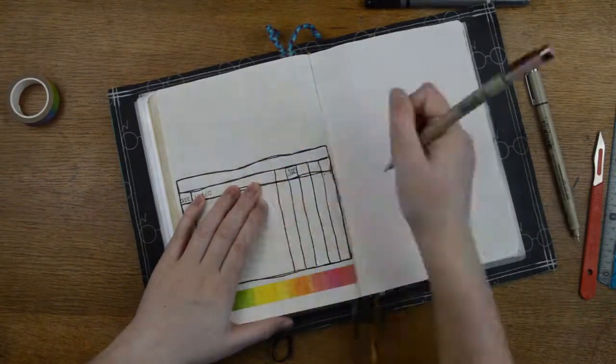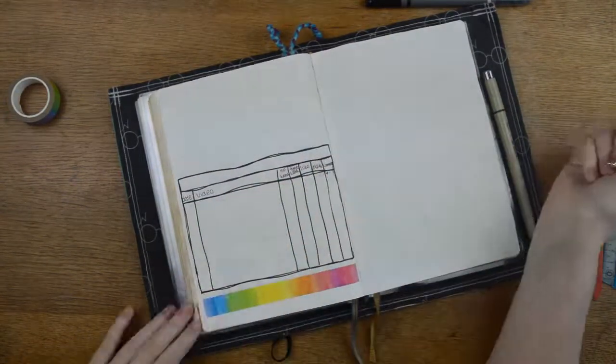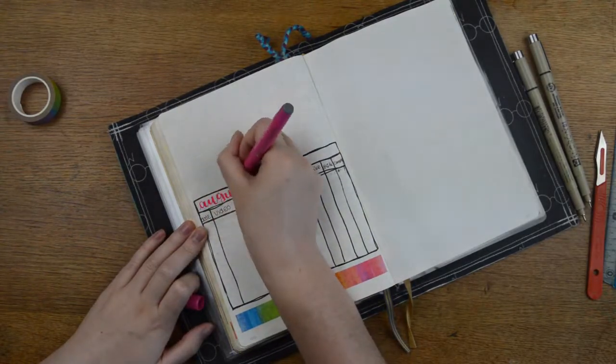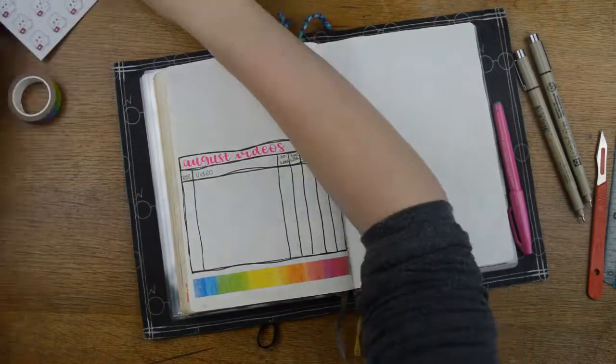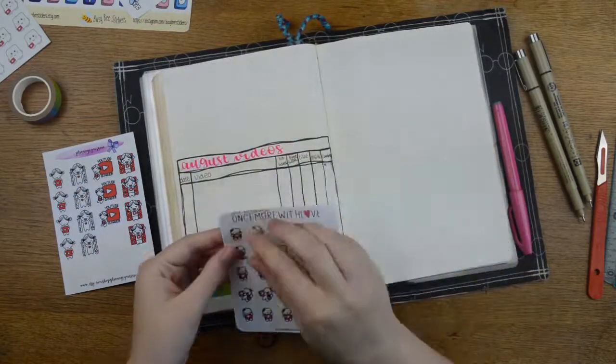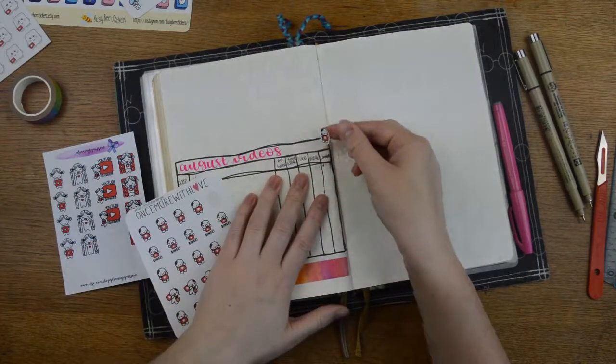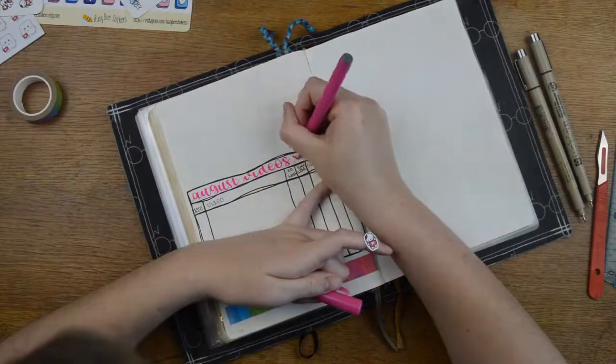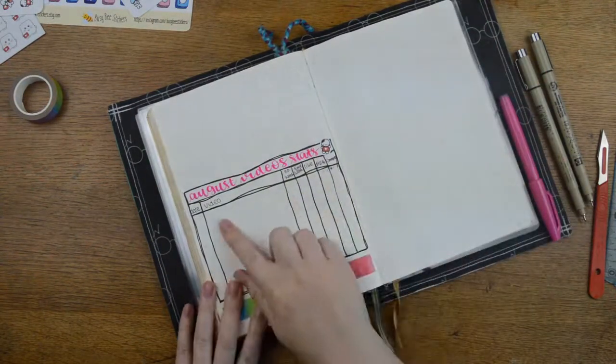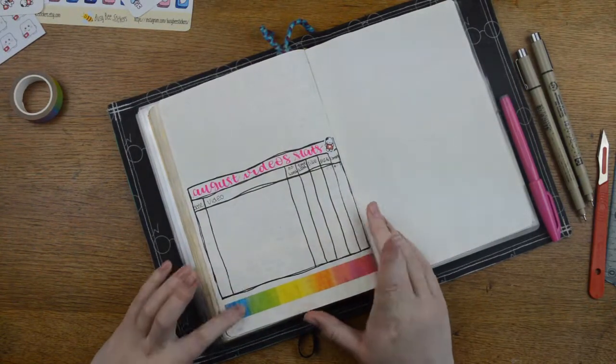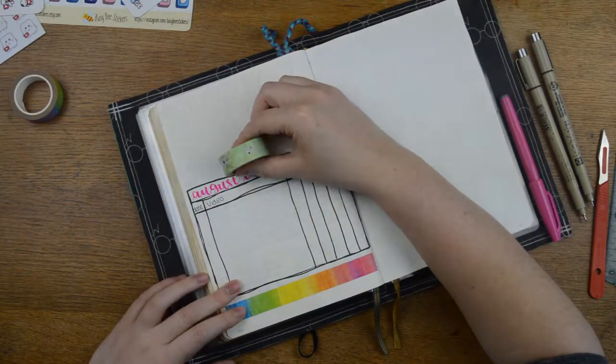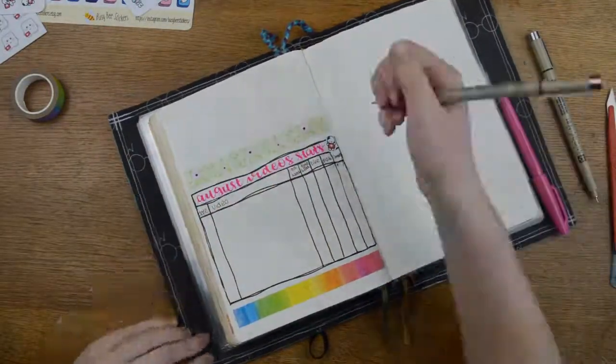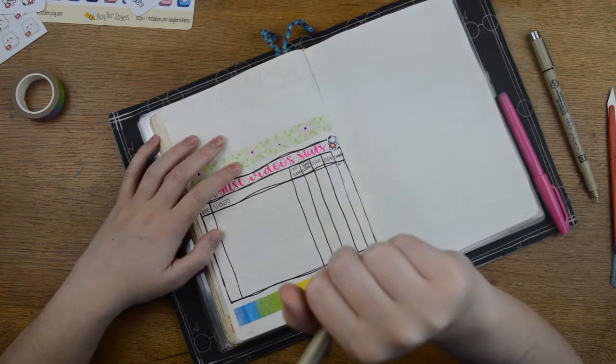I decided I wanted another column. Just going to write in August videos. Just going to pull in a little munchkin. That's that bit. Back in one second.